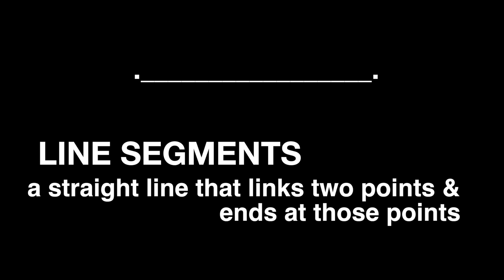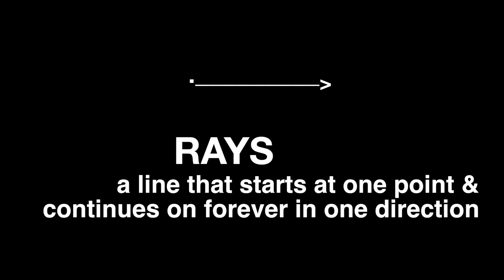Line segments are straight lines that link two points. The line segment has a definite point where it begins and ends and does not continue on forever. Rays are lines that start at a point and continue on forever in one direction — the point marks the start and the arrow symbolizes that the line continues on forever in that direction.